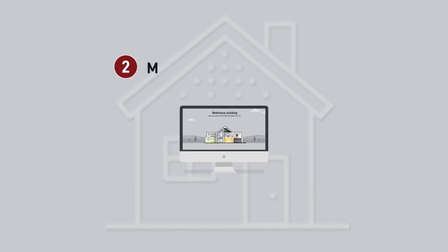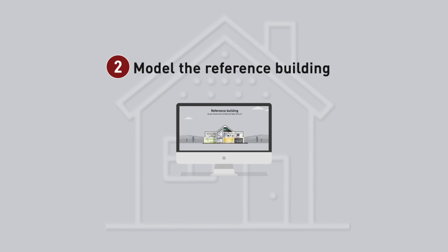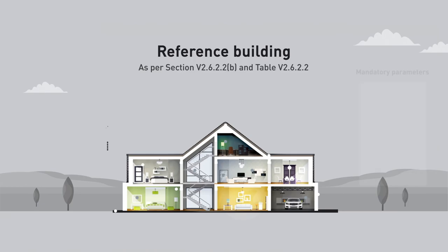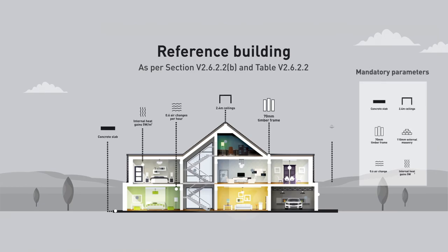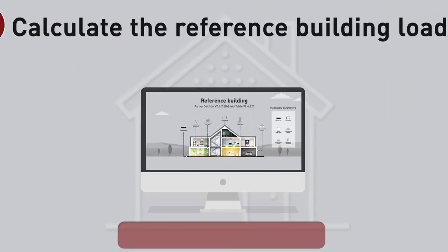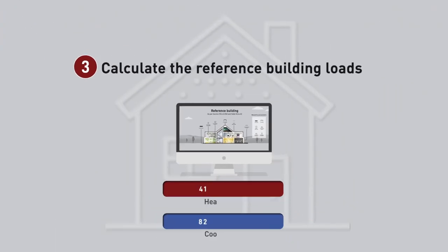Step two is to model the reference building. In this model, include the mandatory parameters as listed in table V2.6.2.2. Step three: calculate the reference building loads.